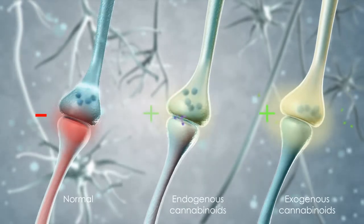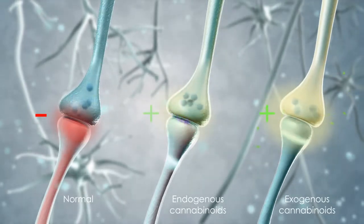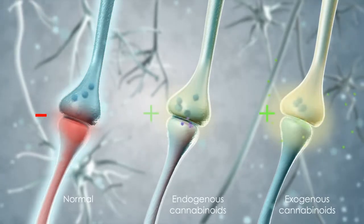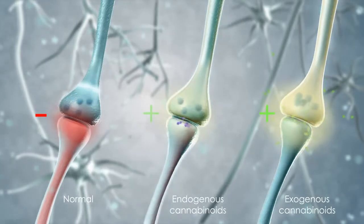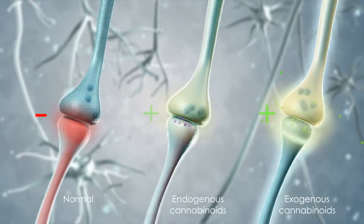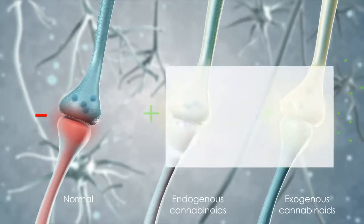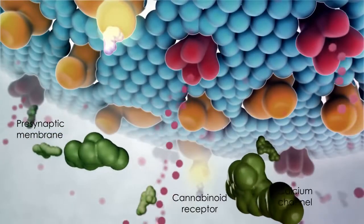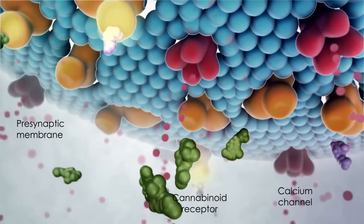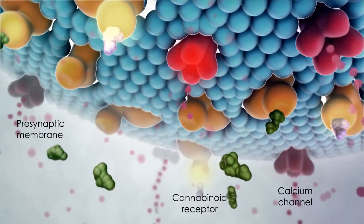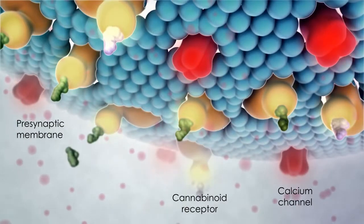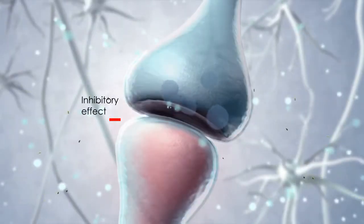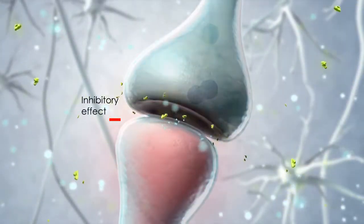Exogenous cannabinoids exert their modulatory effects upon the abundant cannabinoid receptors distributed throughout the CNS. The effects of cannabinoids may be illustrated by comparing three neuronal synapses showing normal pain transmission, the influence of endogenous cannabinoids, and the influence of exogenous cannabinoid administration. Exogenous cannabinoids from the bloodstream bind to cannabinoid receptors on the presynaptic neuron and mimic the endogenous synaptic modulatory effect by decreasing influx of calcium ions. In this way, pain and other neural processes are modulated.